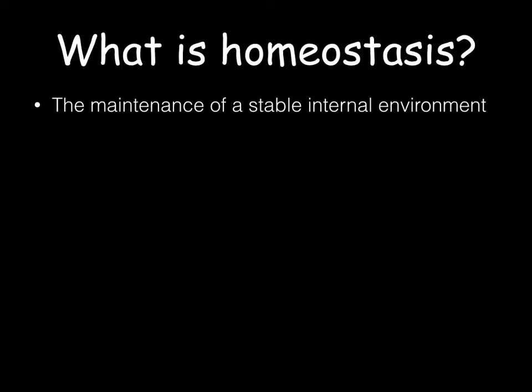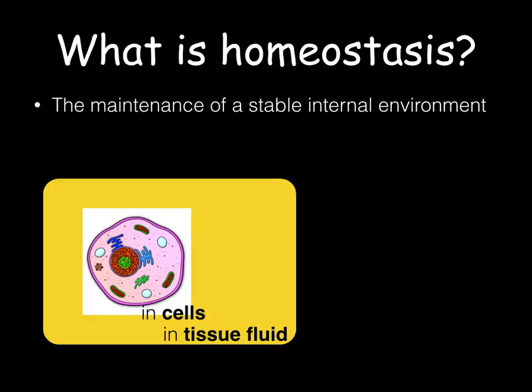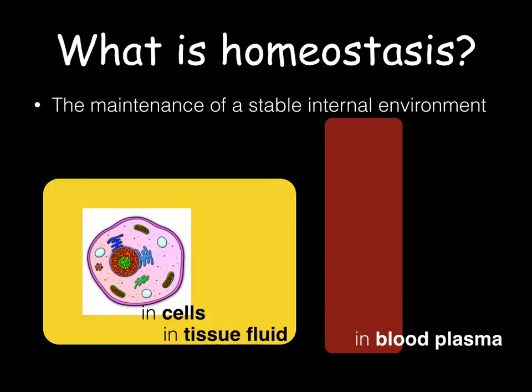What is homeostasis? Homeostasis is the maintenance of a stable internal environment in the cells, in the tissue fluid surrounding the cells, and in the blood plasma. It involves maintaining the chemical makeup, volume, and other features of blood and tissue fluid within narrow limits — these are called the normal ranges. Homeostasis means that the cells in the body are in an environment that meets their needs and allows them to function normally despite external changes.